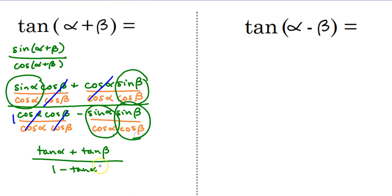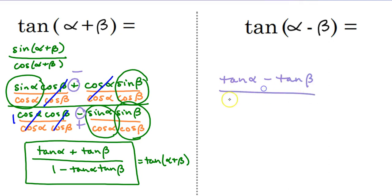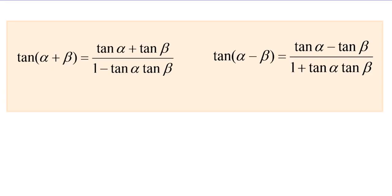So sine beta over cosine beta is tangent beta, and that is our identity for tangent alpha plus beta. The same thing happens for tangent alpha minus beta, but the difference is we have a minus on top and a plus on the bottom. So we end up with tangent alpha minus tangent beta over one plus tangent alpha times tangent beta. Notice about the signs: when you have minus, you have minus on the top; when you have plus, you have plus on the top — and then the opposite sign on the bottom. So those are our tangent sum and difference identities, and that completes the proofs. Thanks for watching.